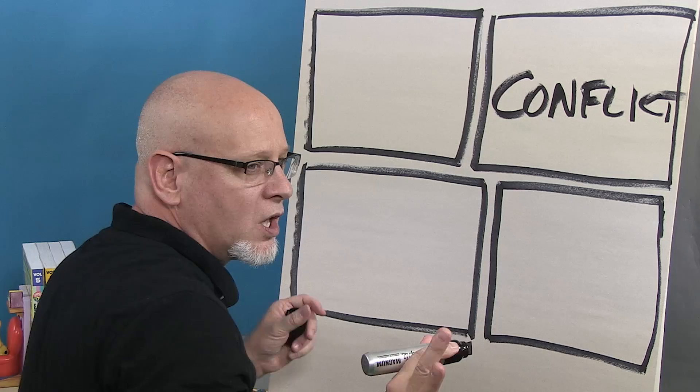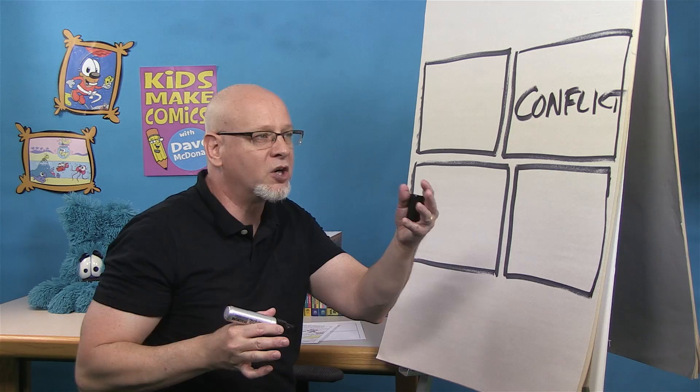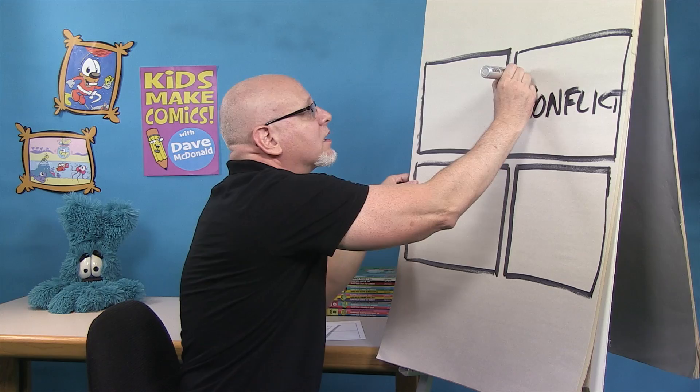And I like to do that with conflict. Conflict. You know what conflict is? Conflict is trouble. Conflict is a problem. Conflict is obstacles. It could be a person, like a villain, or it could be some kind of an event. But you want to hook the reader.